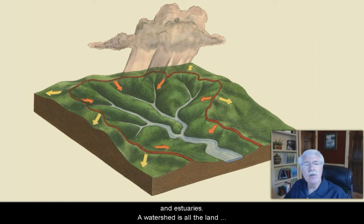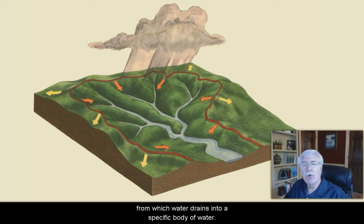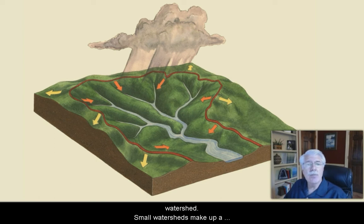A watershed is all the land from which water drains into a specific body of water. Sections of connected hills and valleys form each watershed. Small watersheds make up larger watersheds. Everyone lives in a watershed and all land on earth is part of some watershed.